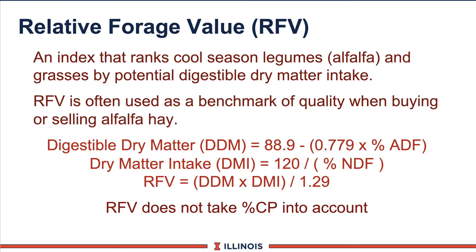RFV is an index that ranks cool season legumes and grasses based on their potential for dry matter digestibility and intake. You can see the formula on the bottom. The key here is that it's really driven by ADF and NDF, so be aware of that with RFV. It's a ranking program.